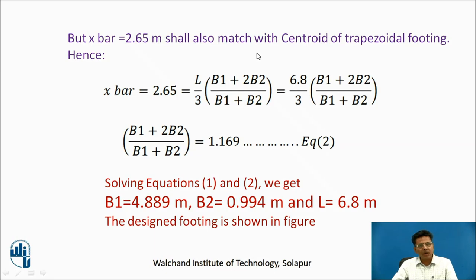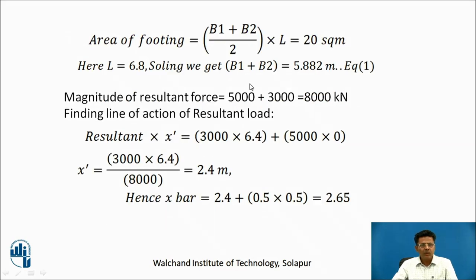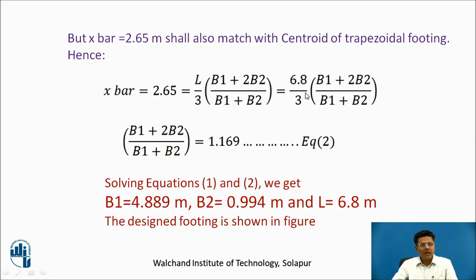The value x bar = 2.65 m must match the centroid of the trapezoidal footing. Hence: 2.65 = L/3 × (B1 + 2B2) / (B1 + B2). Substituting L = 6.8 and solving gives: (B1 + 2B2) / (B1 + B2) = 1.169. Combined with Equation 1 (B1 + B2 = 5.882), solving the two equations yields B1 = 4.889 m, B2 = 0.994 m, and length L = 6.8 m.